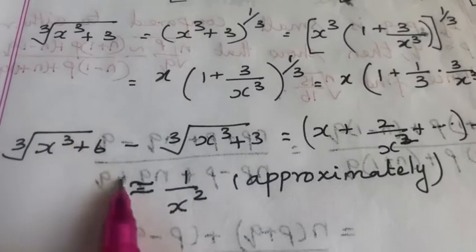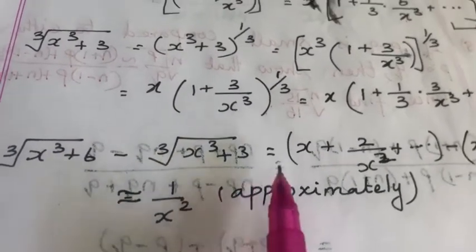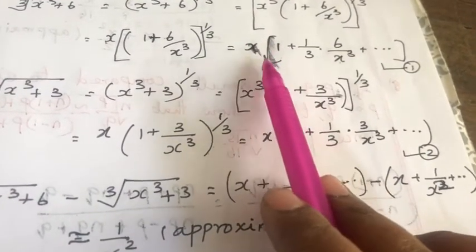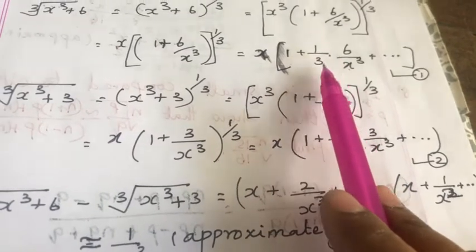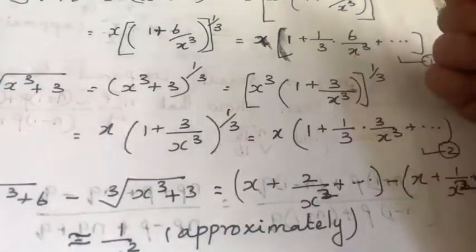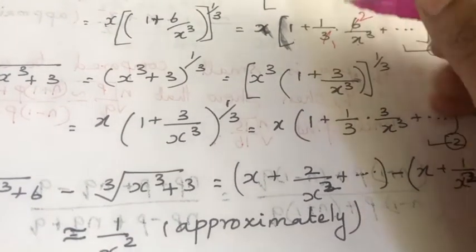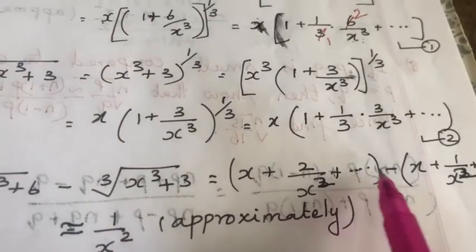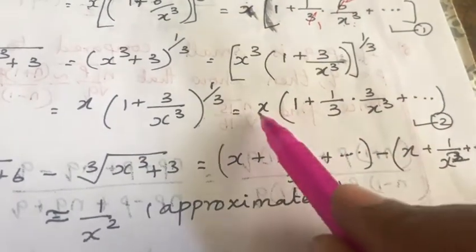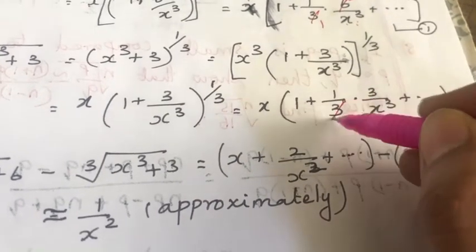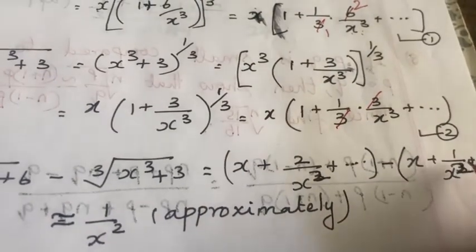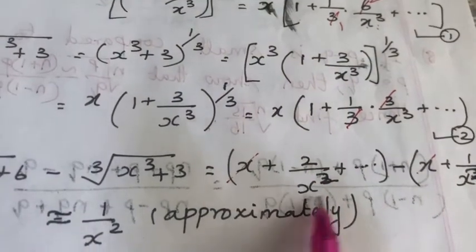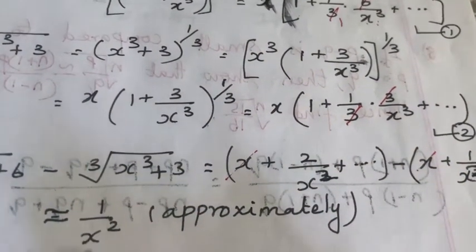So ∛(x³ + 6) − ∛(x³ + 3) equals: while subtracting, multiplying x inside, the first expression becomes x + (x/3)·(6/x³) = x + 2/x² + etc. Similarly, the second becomes x + (x/3)·(3/x³) = x + 1/x² + etc. So x and −x cancel, giving 2/x² − 1/x² = 1/x².